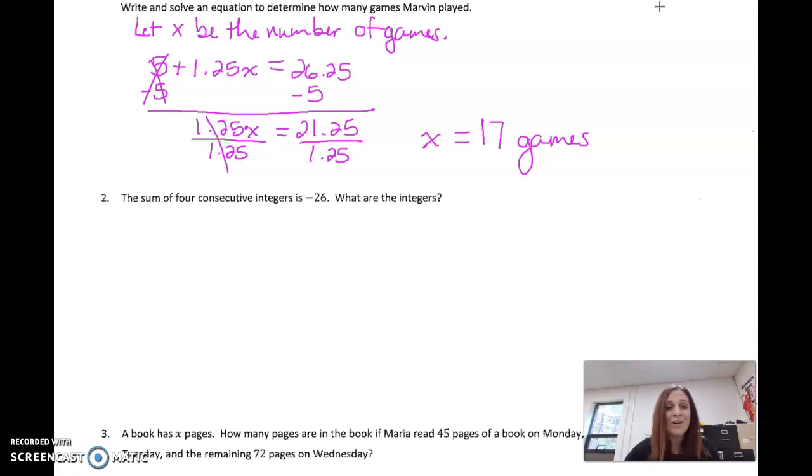The sum of four consecutive integers is negative 26. What are the integers? Well, I'm going to let x be the first integer.